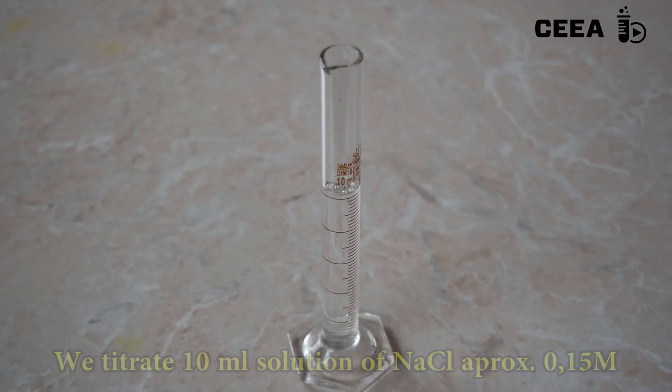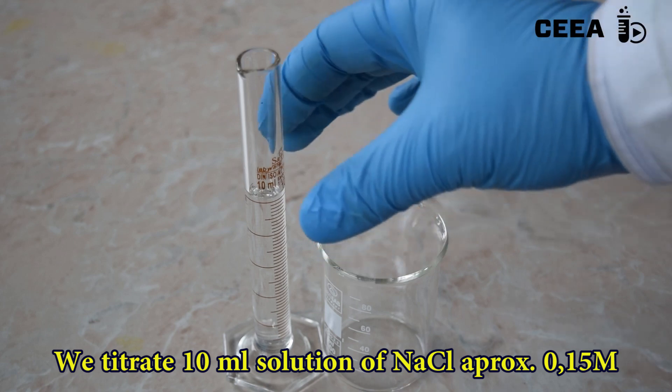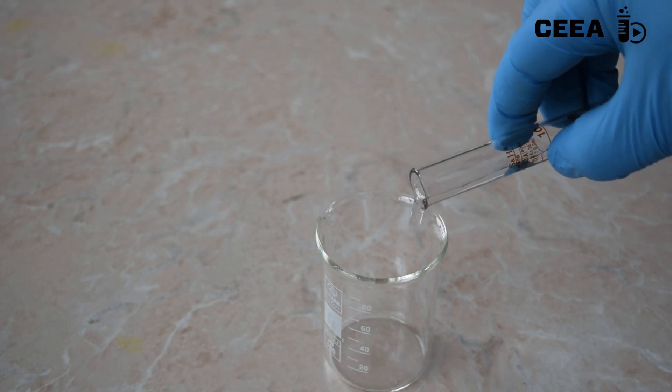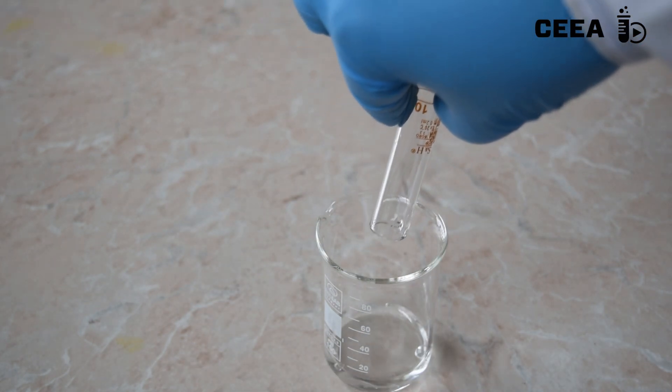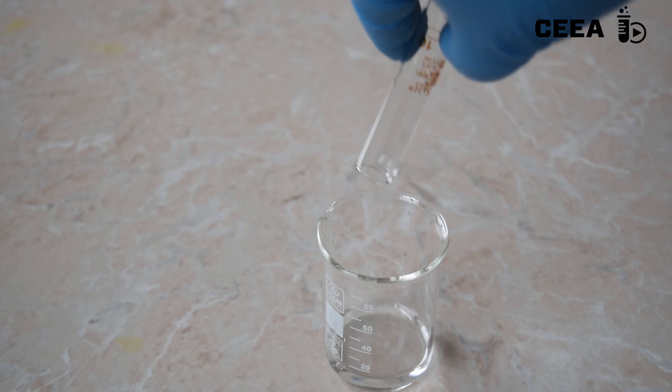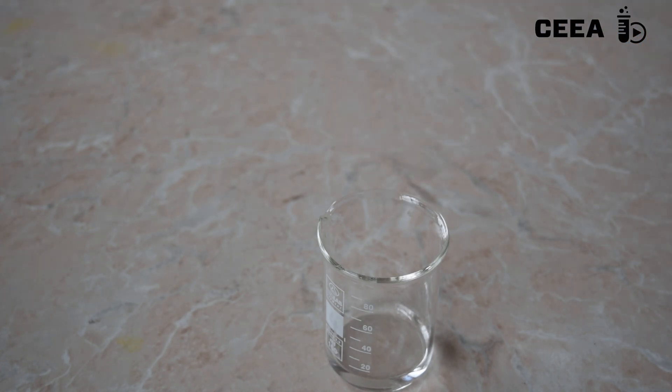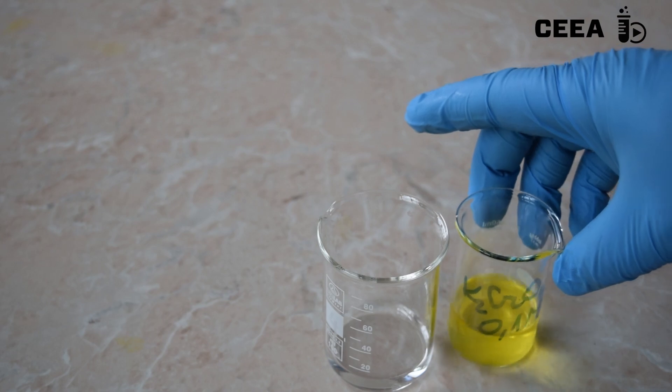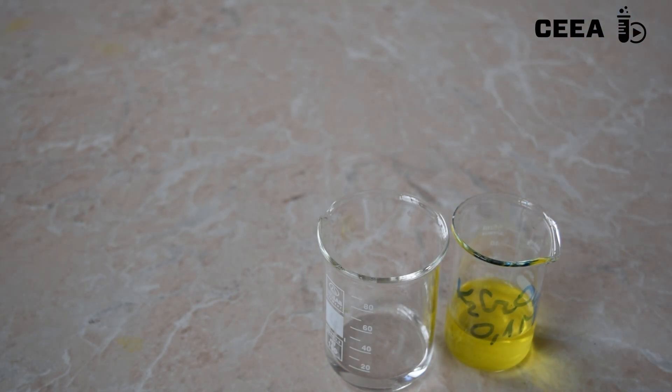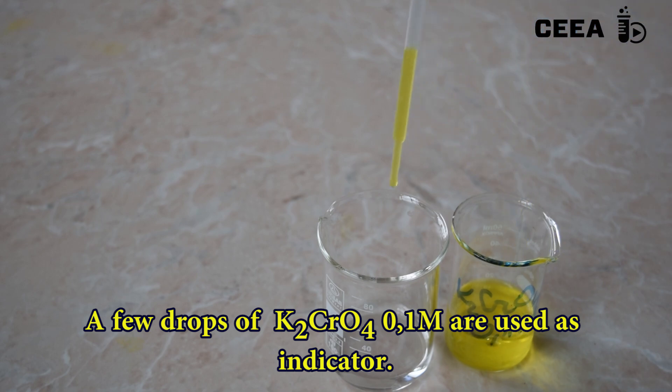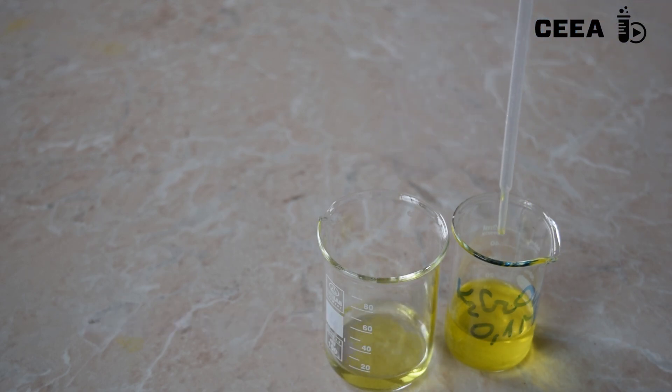To perform the titration we place 10 ml of 0.15 molar sodium chloride in a beaker. We add a few drops of 0.1 molar solution of potassium chromate as indicator.